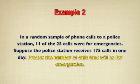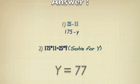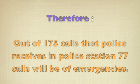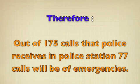Whenever you solve this problem and it says the word predict, it means that whenever you get the answer, it doesn't basically mean that you have the right answer. Out of 25 calls, you get 11 calls for emergency. And we don't know how many out of 175 — you get a Y number of calls. So you do cross multiplication, and whenever you solve for Y, you get Y to be 77. So therefore, out of 175 calls that the police station receives, 77 calls will be of emergency.